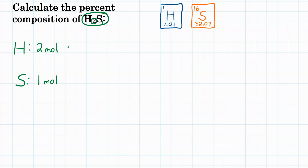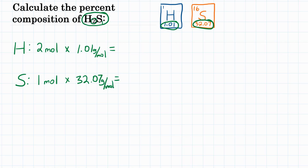So we're going to multiply by the molar mass of each element. For hydrogen, we look at our periodic table and see the molar mass is 1.01 grams per mole. And for sulfur, we look at the periodic table and see 32.07 grams per mole. Solving both, hydrogen gives us 2.02 grams after moles cancel out, and for sulfur, 1 times 32.07 is 32.07 grams. So we have the respective masses for these elements in H2S.